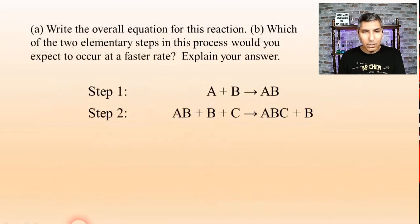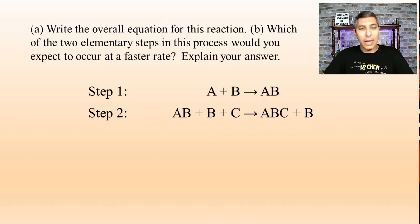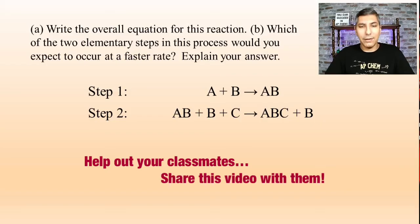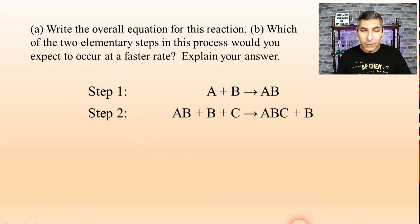Now, let's take a look at a couple more questions here as we wrap up unit five. Part A gives us a reaction mechanism that says, first of all, write the overall equation for the reaction. And then part B says, which of the two elementary steps in this process would you expect to occur at a faster rate? And explain your answer. So once again, we have this two-step mechanism. All we have to do is add these together.